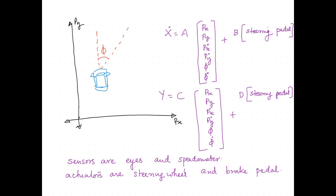We now move to a higher-dimension system where the position, velocity, and yaw of the system are known. Including their rates — that is, derivatives — a state model can be made with px, py, px-dot, py-dot, phi, and phi-dot, where phi is the yaw or direction angle. Here the inputs are the steering wheel and the brake pedal, which are the actuators, and the outputs or sensors are the eyes and the speedometer.